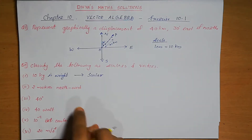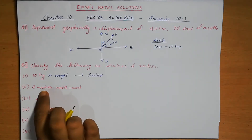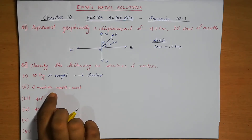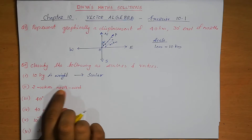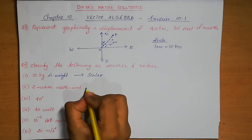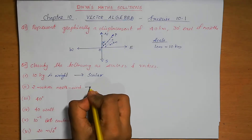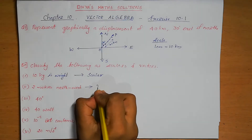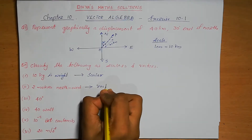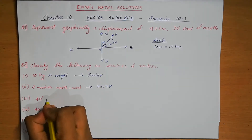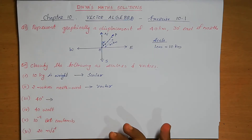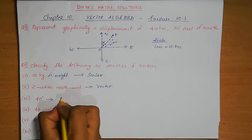Next, 2 m north west. North west means direction is given. 2 m north west has magnitude as 2 m as well as direction as north west. So if magnitude and direction are both present, that is a vector. So 2 m north west is a vector. Next one is 40 degrees — 40 degrees means there is only magnitude, so this one is scalar.